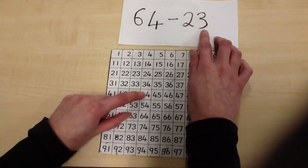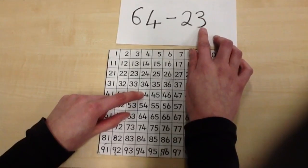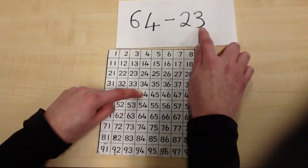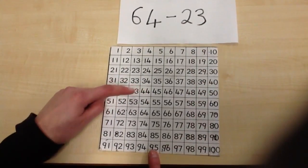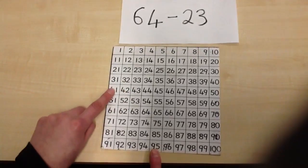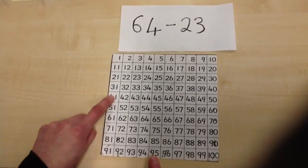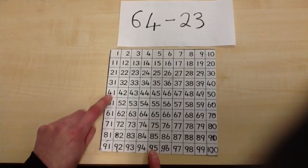Then I look to see how many units there are. And there are 3 units. So I go back 3. 1, 2, 3. So the answer to 64 take away 23 is 41.